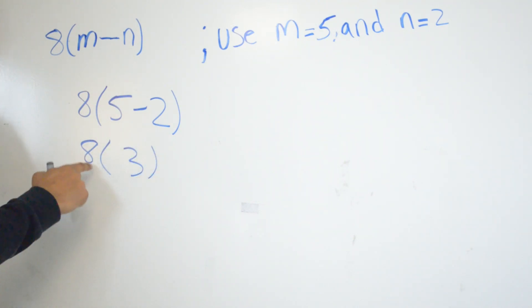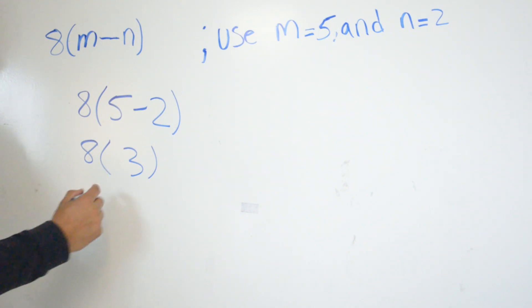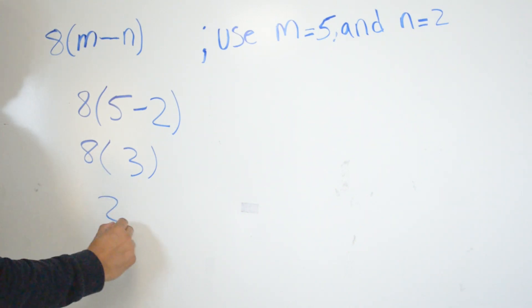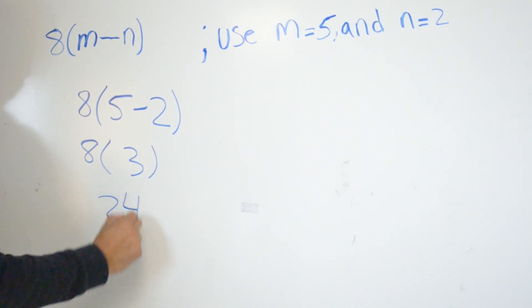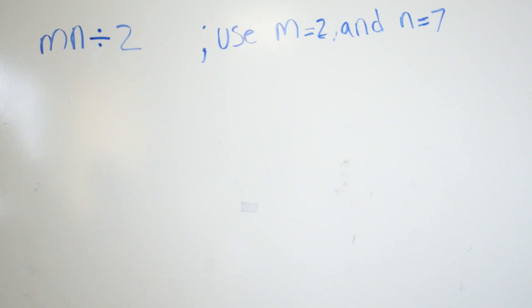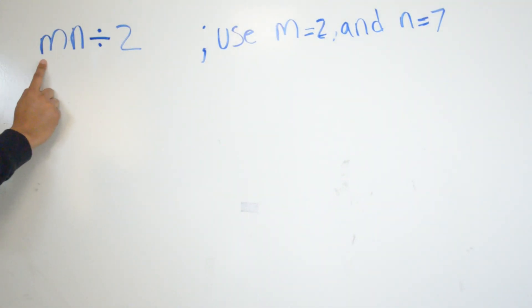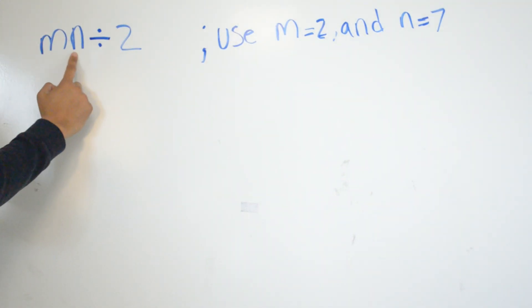We do 5 minus 2 which is 3, and then we just multiply 8 times 3, which is going to be 24.